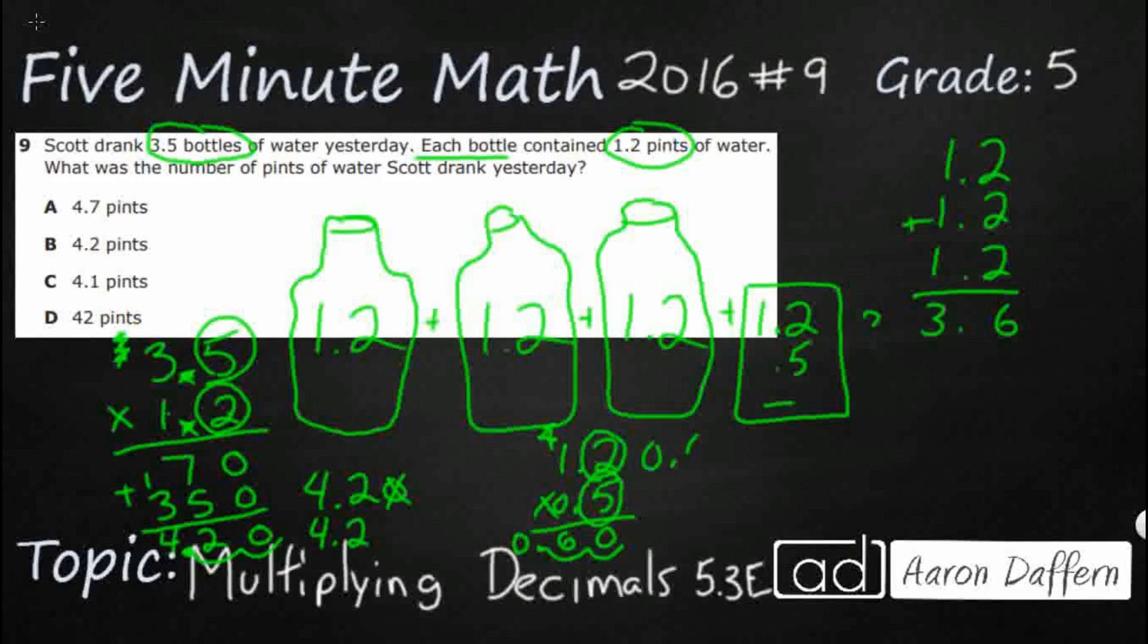So that's what this is, 0.6. So we add this 0.6 in here. And guess what we're going to get. 4 and 2 tenths, 4.2. Our answer is B.